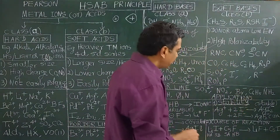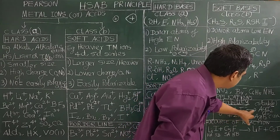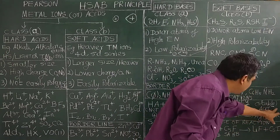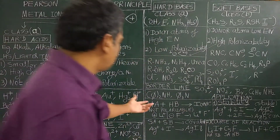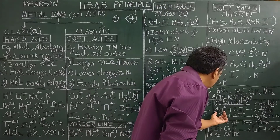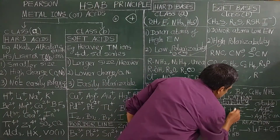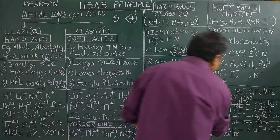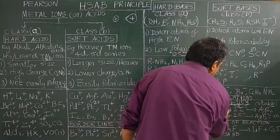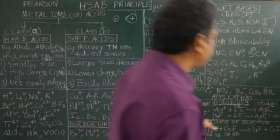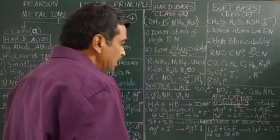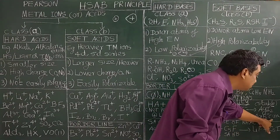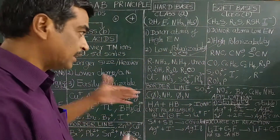The first application is the stability of complexes. For example, Ag+ with 2I− forms AgI2−, and Ag+ with 2F− forms AgF2−. Ag+ is a soft acid; I− is a soft base. According to HSAB, soft acid–soft base interactions are preferred, so AgI2− is a stable complex, whereas the soft acid with a hard base interaction is unstable.